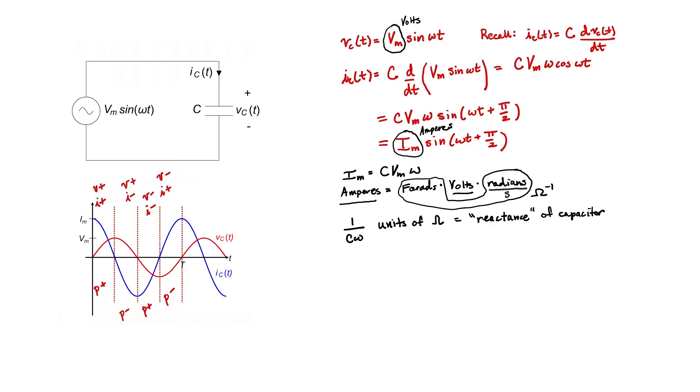You can see that we have a very similar situation in the capacitor as we had in the inductor. Sometimes the capacitor stores power and then sometimes the capacitor gives back the power. So we could have a problem if we naively think that power always flows from the source towards the capacitor.